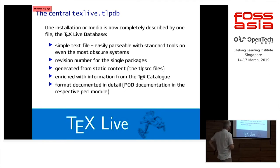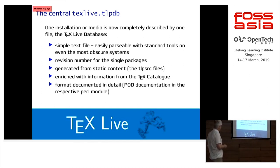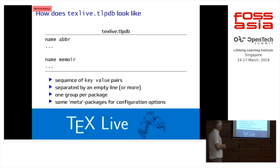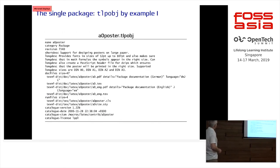The central database is the TeX Live database — a simple text file. It has revision numbers for single packages. Every package is one stanza, one paragraph, separated by an empty line. It's generated static content from TeX Live source files, enriched with additional data from various sources — mainly from the TeX catalog, based on the CTAN network. In basic terms: Debian package file format, key-value pairs, one group per package, and some meta configuration.